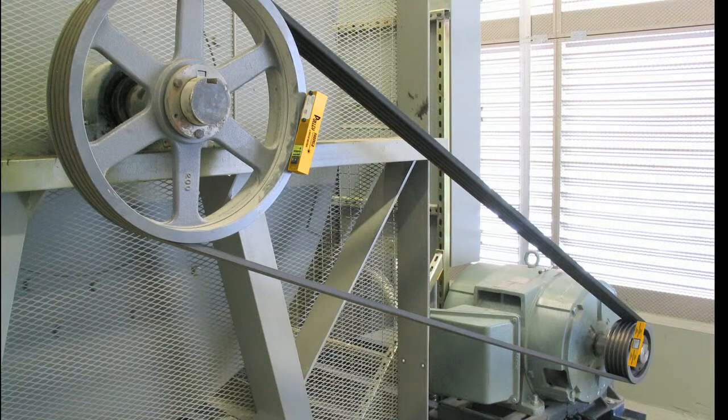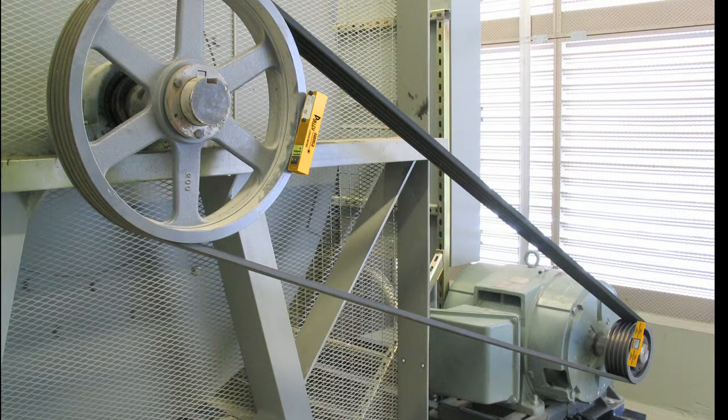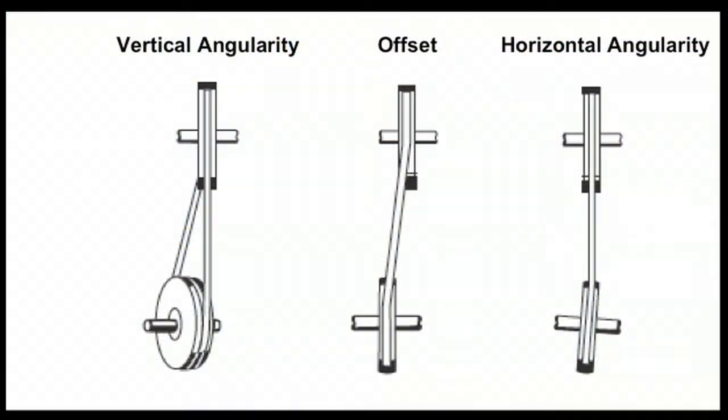In some cases, both pulleys and shafts may need to be adjusted to achieve the desired alignment. There are three basic parameters that describe pulley misalignment. These include vertical angularity, horizontal angularity, and axial offset, and may occur in any combination.